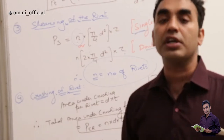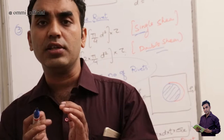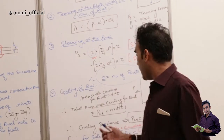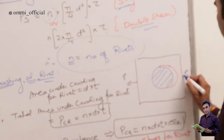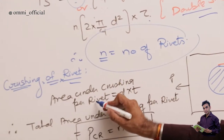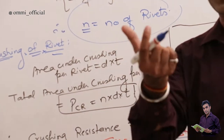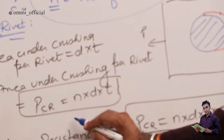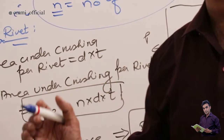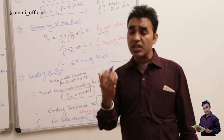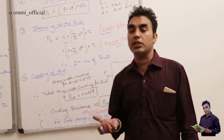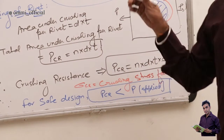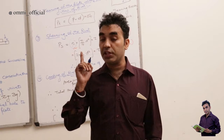Fourth is crushing of the rivet. When force is applied, the diameter of the hole changes and some material loss takes place. The bearing area under crushing is d × t, where t is the plate thickness and d is the rivet diameter. The total crushing strength is Pcr = n × d × t × σcr, where n is the number of rivets and σcr is the crushing strength. For safe design, the crushing load should be less than the applied load.